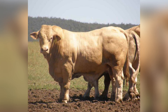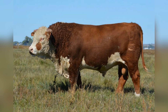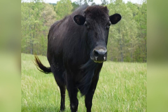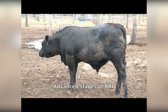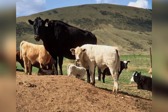Parasitic infections also pose a major threat to beef cattle health. Internal parasites such as worms — e.g., Ostertagia, Cooperia, and liver flukes — and external parasites like ticks and flies cause significant losses in weight gain and overall productivity. Heavy parasite infestations lead to anemia, diarrhea, reduced feed conversion efficiency, and even death in severe cases. Preventing parasitic infections requires an integrated approach, including rotational grazing, strategic deworming, and maintaining clean housing conditions. Farmers should conduct regular fecal tests to determine parasite burdens and use targeted treatment rather than unnecessary blanket deworming, which can lead to resistance. Controlling external parasites involves using insecticidal sprays, ear tags, and pasture management strategies to reduce tick and fly populations.